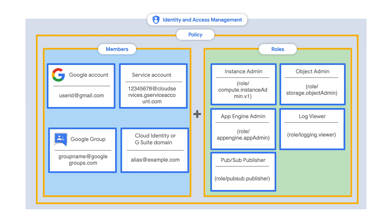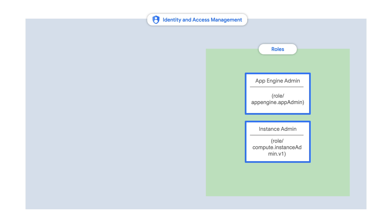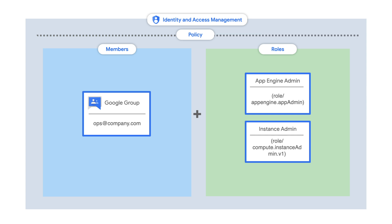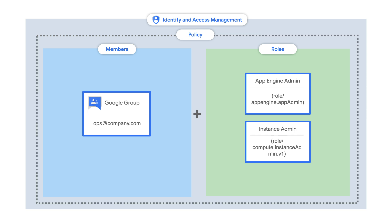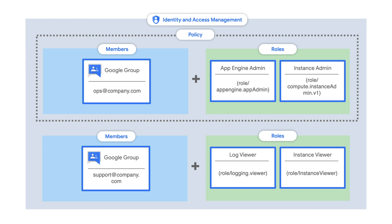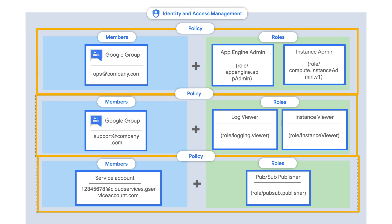Let's take a specific example. An enterprise wants to create a policy for controlling access to all of their virtual machines. They might use instance admin and App Engine admin roles. Then they can create a Google group for the ops team that will manage the instances, and the policy would link the members and the roles together. They could then create a read-only policy including log viewer and instance viewer roles for their support team members, and perhaps a policy with the Pub/Sub publisher role for the service account of one of their microservices — that would be three separate policies. That's the relationship between IAM and the resources, projects, and folders.